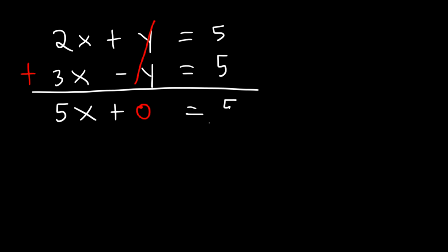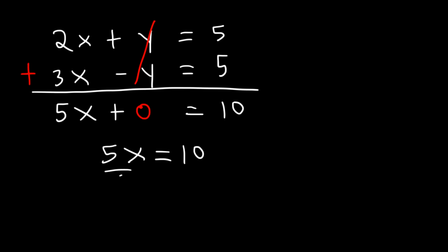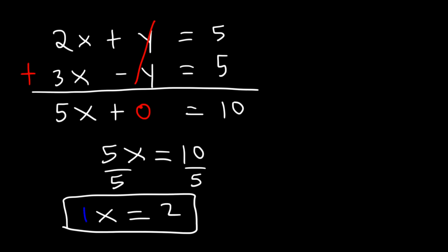So therefore, 5x is equal to 5 plus 5, which is 10. So now we can find the value of x. What we need to do is divide both sides by 5. 5 divided by 5 is 1, so 1x is the same as x. And 10 divided by 5 is 2. So x is equal to 2.